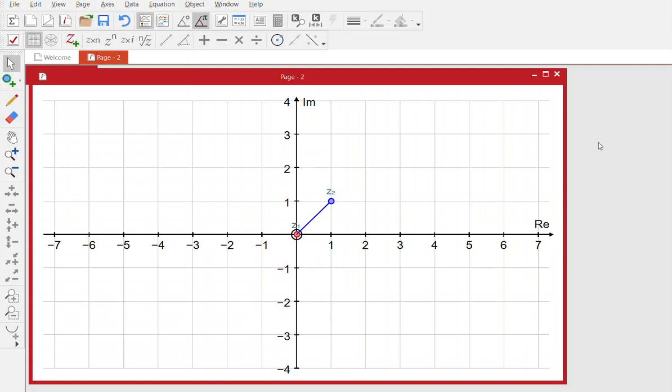So the locus of the arg z minus z1 will be a straight line, so in this direction, z1, z2.